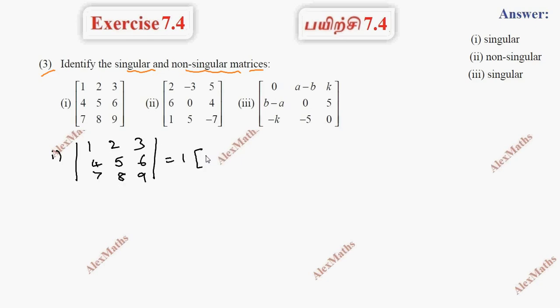Expansion 1 into 45 minus 48 minus 2 into 36 minus 42 plus 3 into 32 minus 35. Total, this is minus 3.